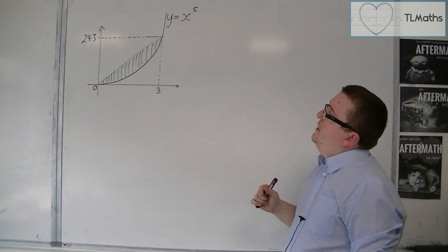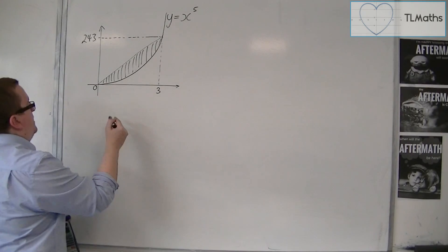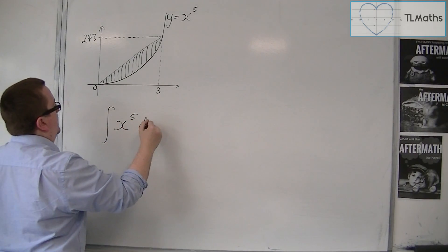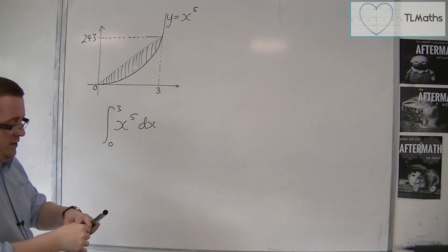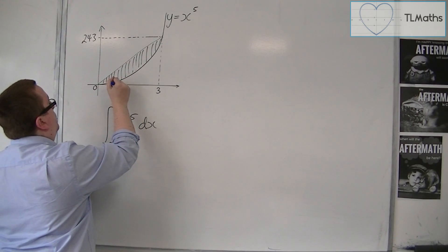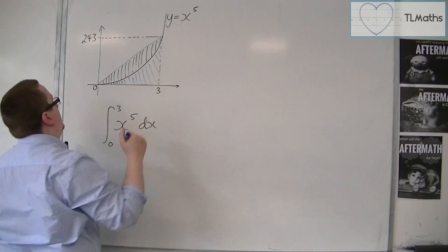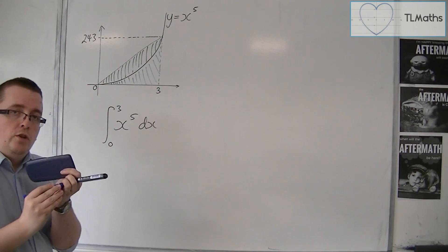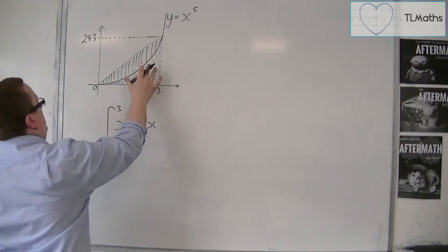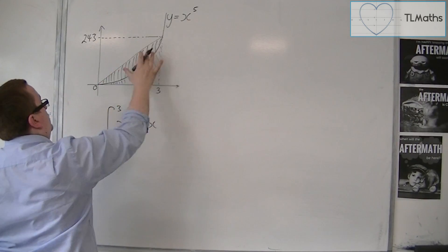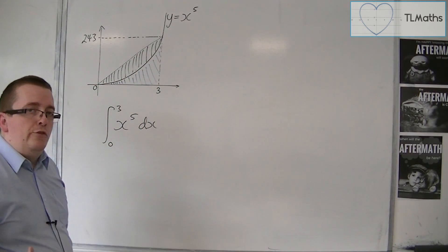Now in order to find the shaded region, it makes sense that I would integrate x to the 5 dx between 0 and 3. And what that's going to do is give me the area between the curve and the x-axis. So it's going to give me that shaded region in blue. Then what I'll do is find the area of that triangle and then subtract the blue area, and I'll have the area that I want.